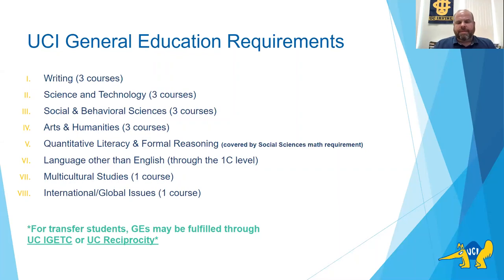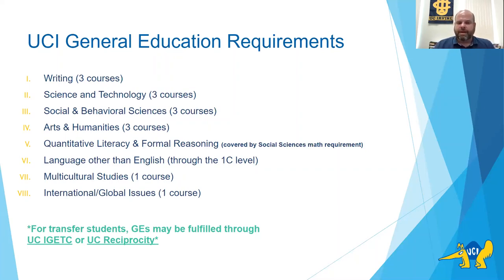For transfer students coming from a California community college, many of these GE requirements may be satisfied through IGETC certification. If you're transferring from another UC, there is UC reciprocity — a letter from your home UC campus confirming your general education is satisfied, which UCI can also accept. IGETC certification must come directly from your home community college; it's not automatically done and must be officially requested and sent electronically to UCI admissions.